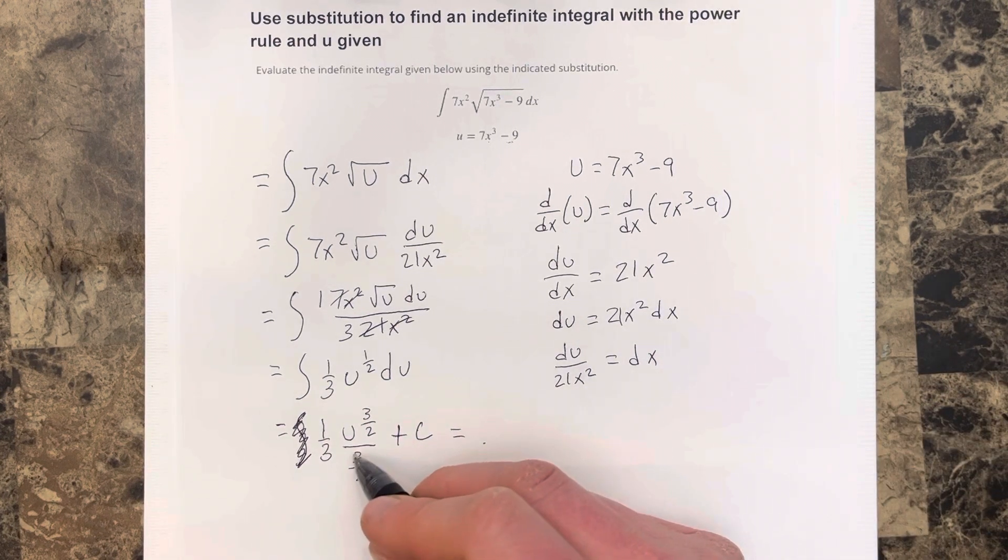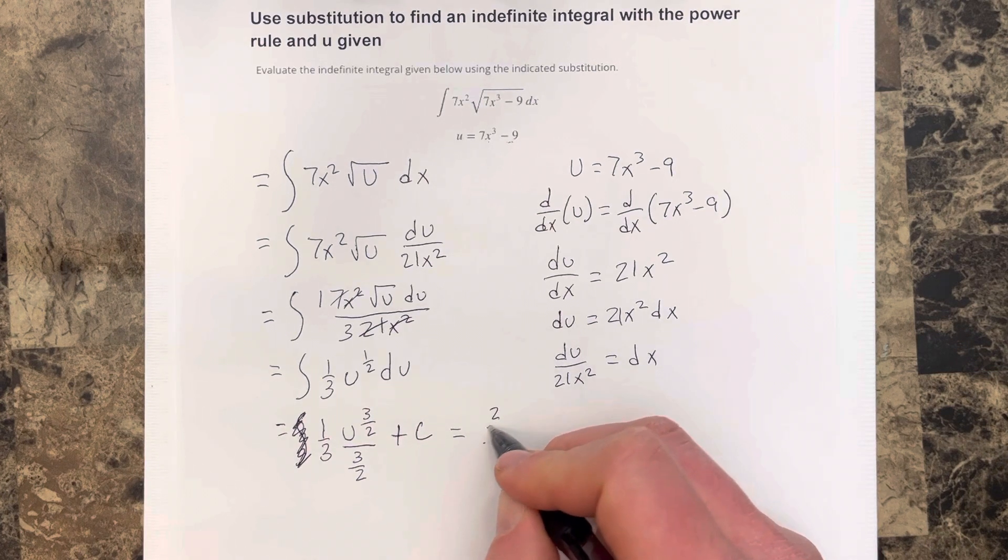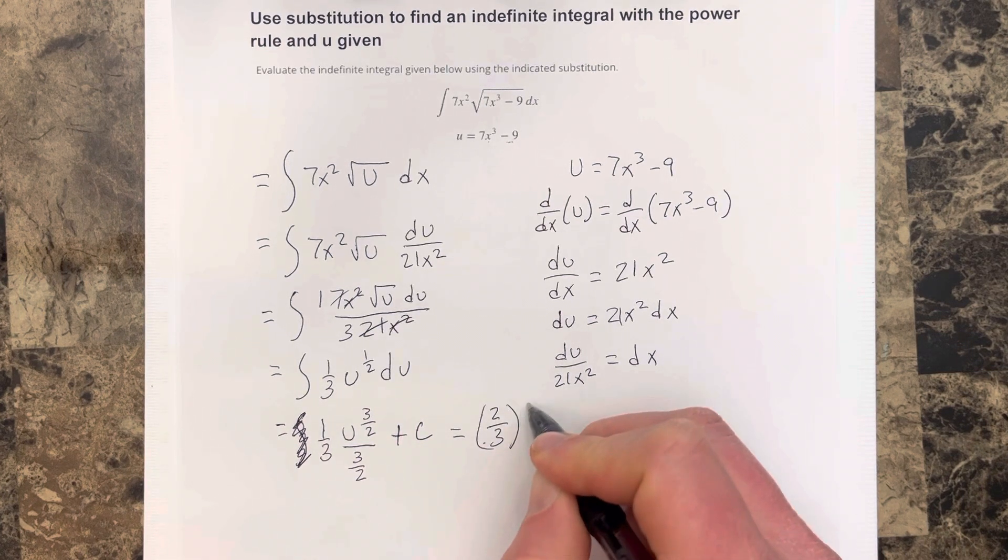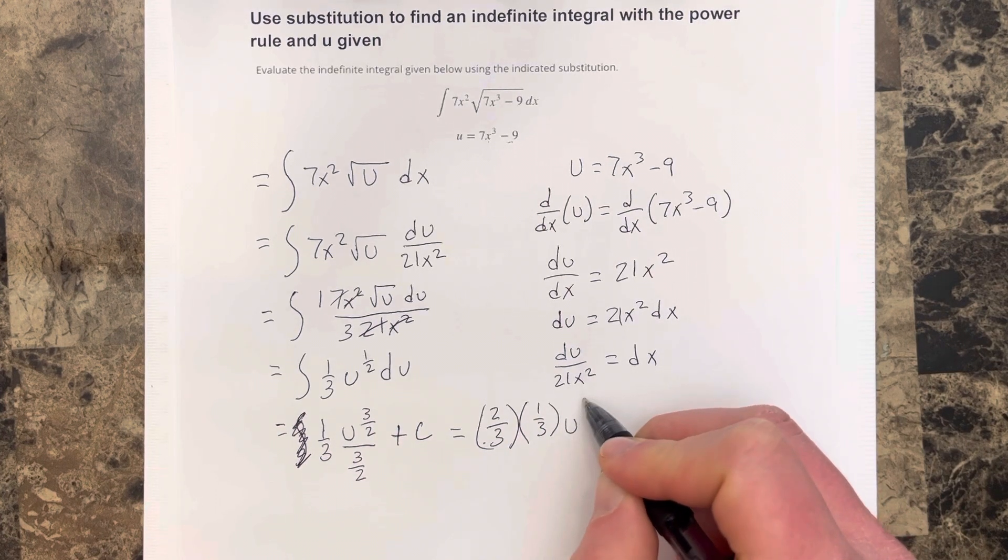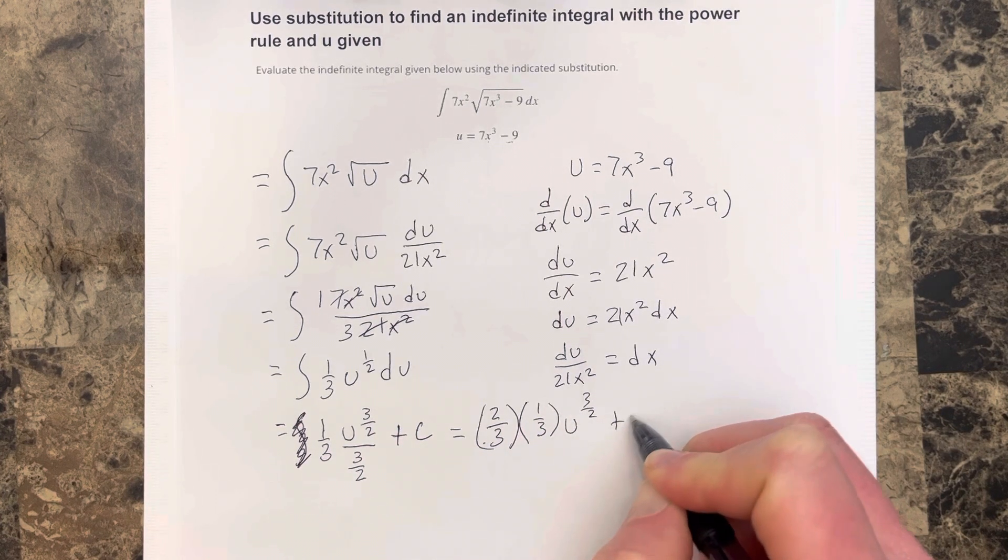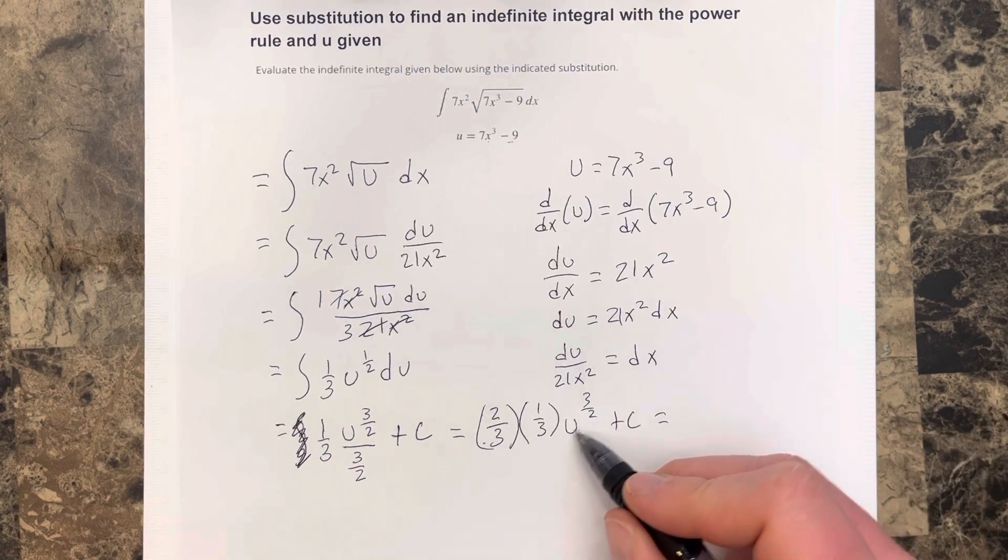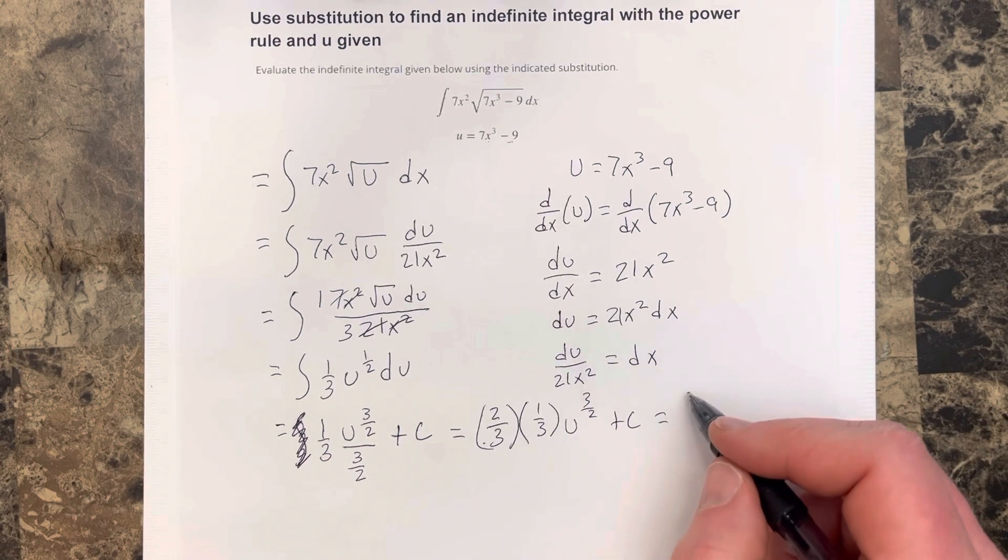So this is equal to, if I take the reciprocal of that, it would be 2 thirds times 1 third u to the 3 halves plus c. Let's substitute u in and let's multiply here. We get 2 over 9.